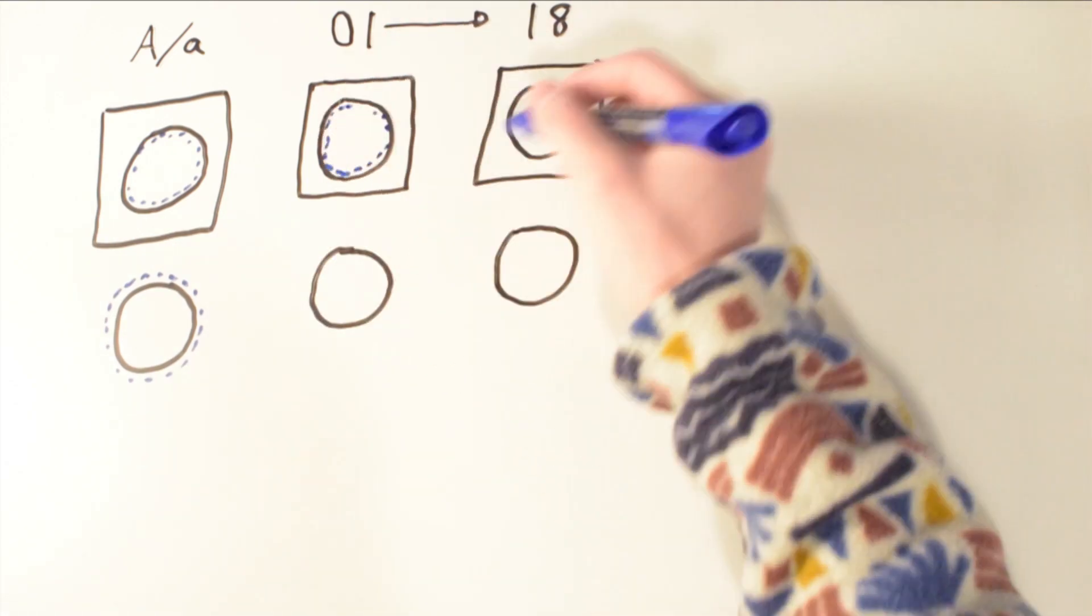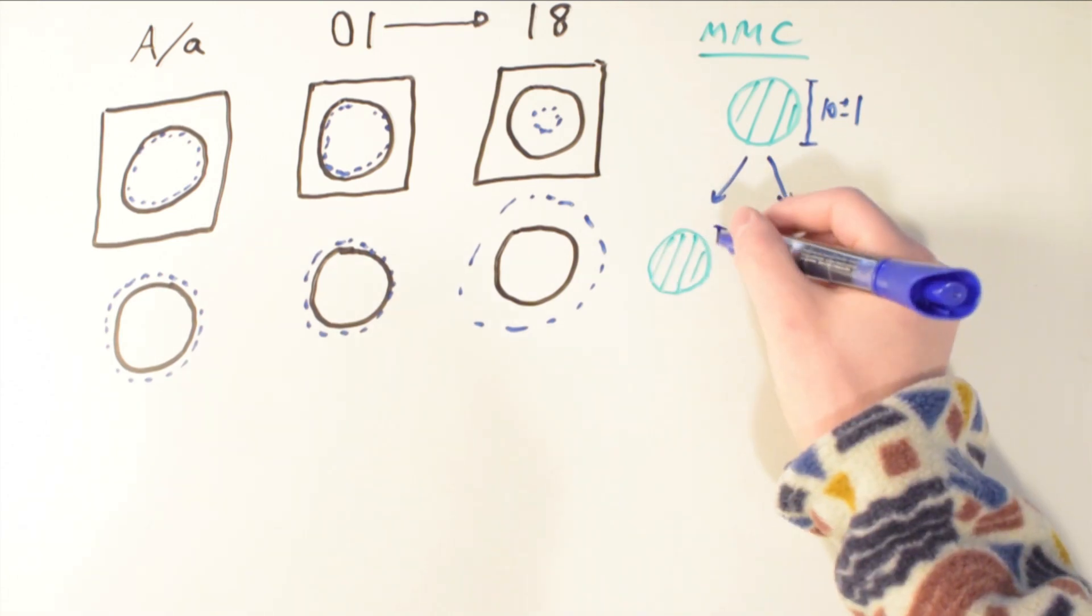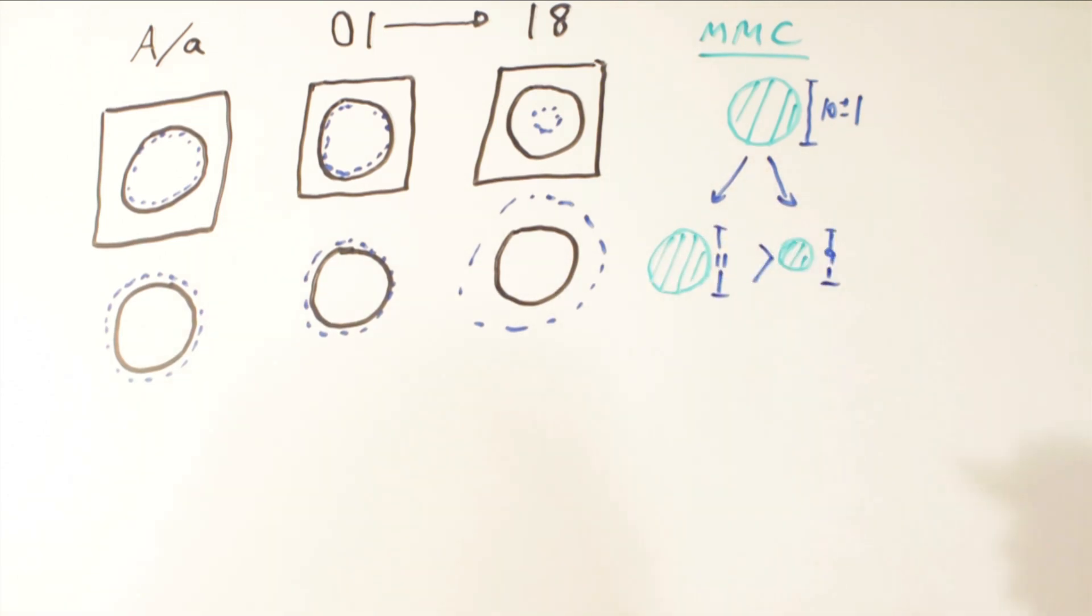I'll start by explaining what max material condition means. Imagine you have a rod that's 10 millimeters plus or minus 1 millimeter diameter. If the rod is 11 millimeters diameter, it will have more material than a rod of the same length at 9 millimeters diameter. Conversely, if a box has a hole that is 10 millimeters plus or minus 1 millimeter, the box will have more material if the hole has a 9 millimeter diameter. If it's easier for you, you can think of it in terms of weight. A max material condition has more weight than a least material condition. With that out of the way, I'll explain the letters.